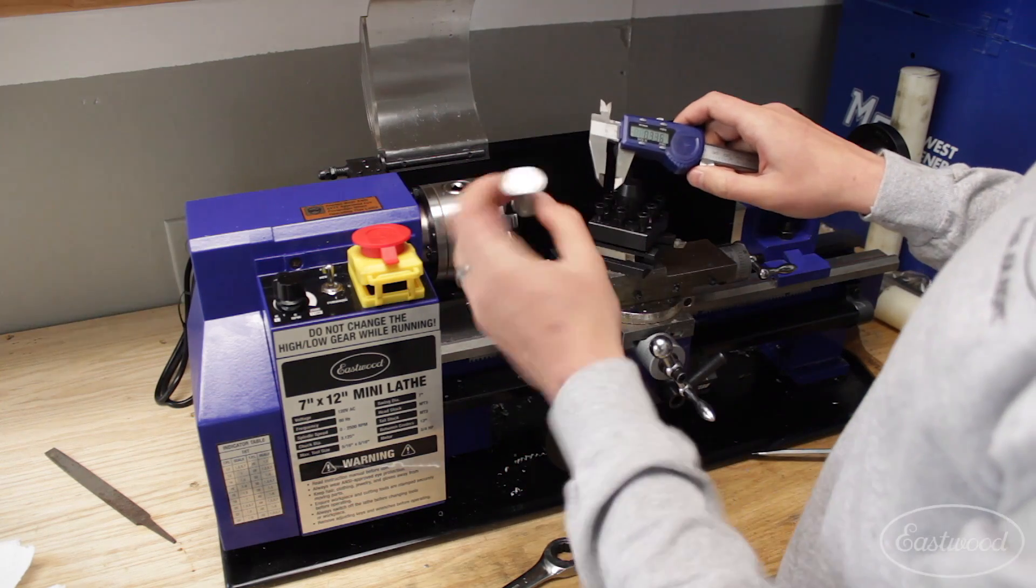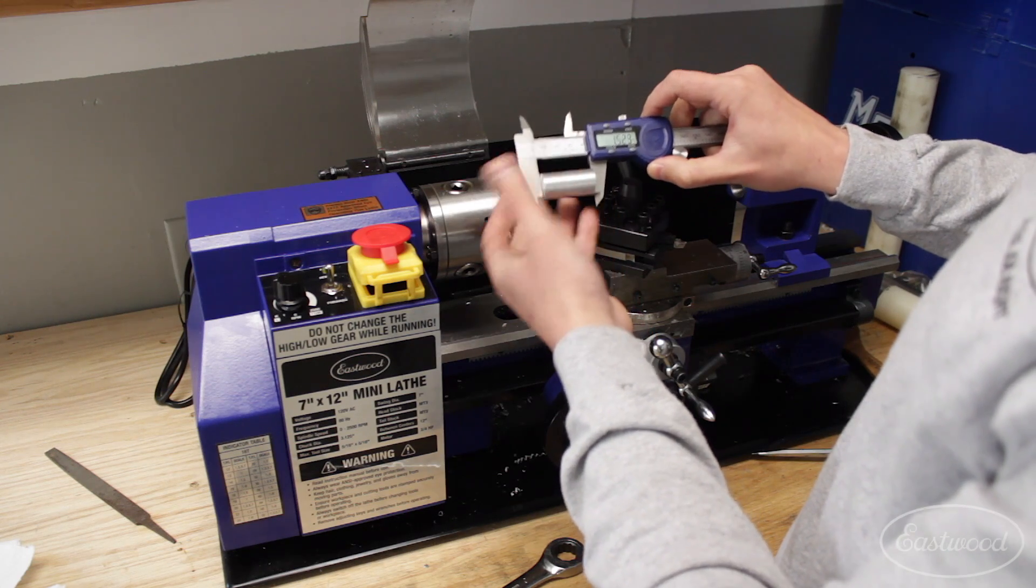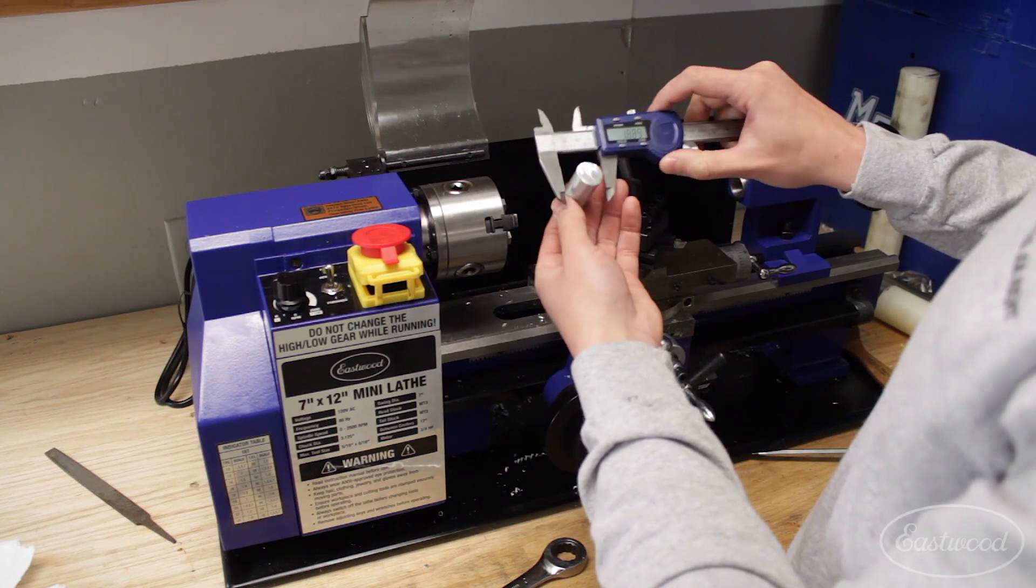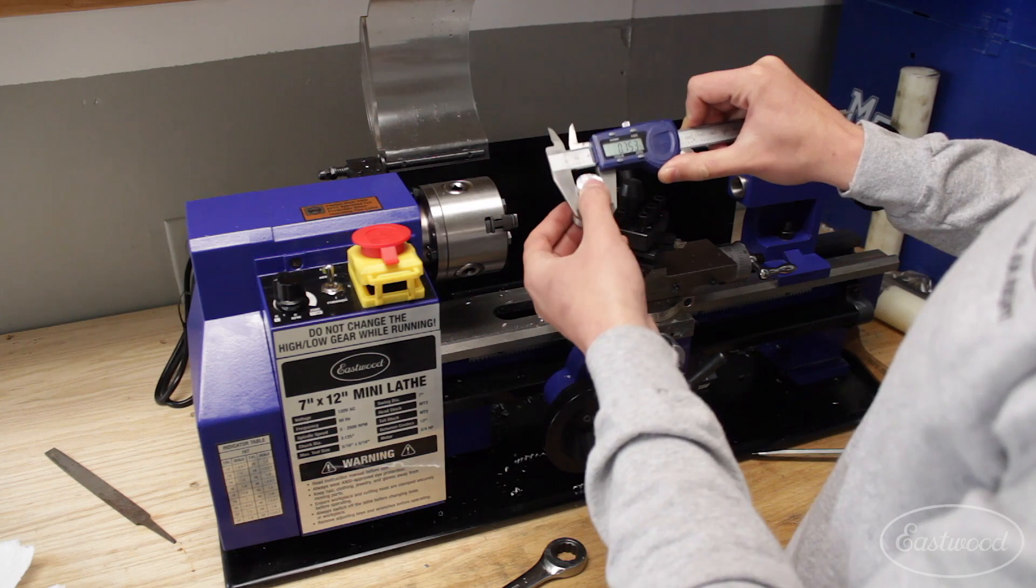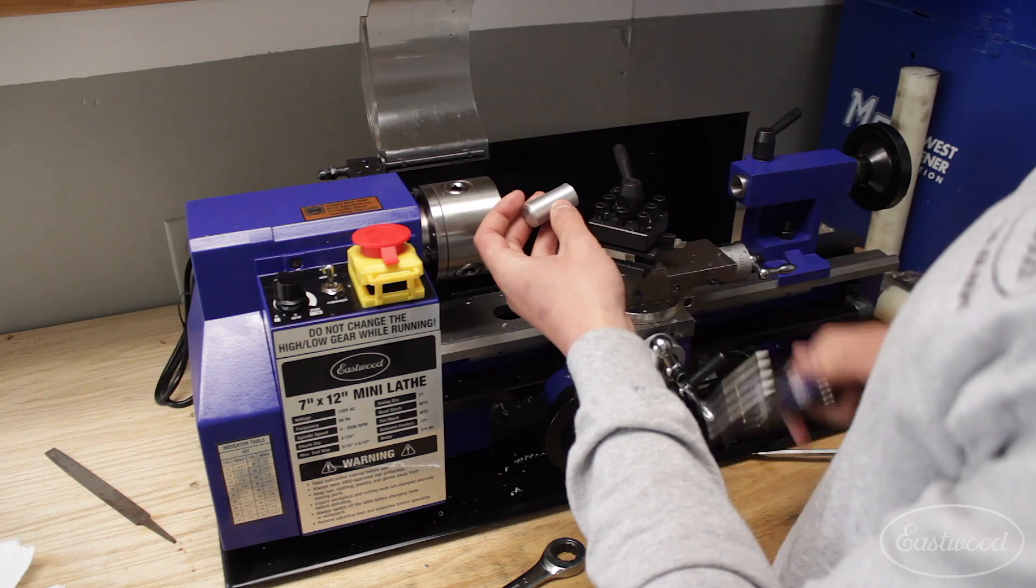All right, so we've got our raw material here. Like I said we did cut it down. So we've got about an inch and a half in length. We're at three quarter on our outer diameter. First we're gonna chuck this up like this and clean up this face from the saw cut.